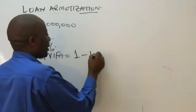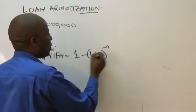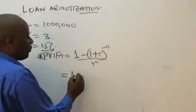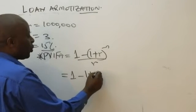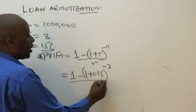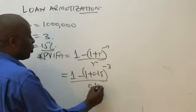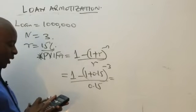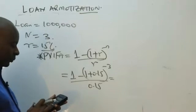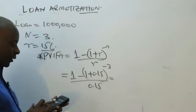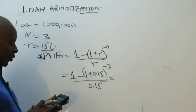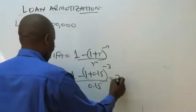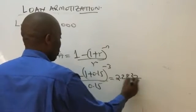PVFA is one minus one plus R raised to negative N, over R. So this will be one minus one plus 0.15, raised to negative three, divided by R which is 0.15. So it will be one minus 1.15 raised to negative three, divided by 0.15, which gives me 2.2832.